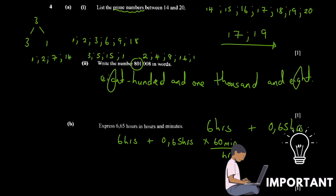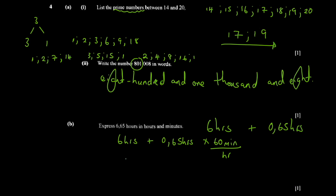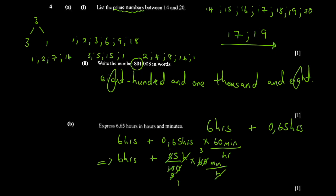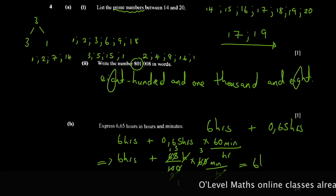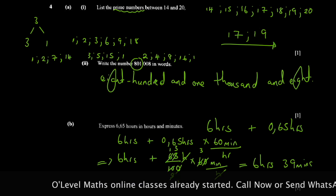So you have six hours plus 0.65 hours multiplied by 60 minutes per hour. It's easier to write 0.65 as the fraction 65 over 100, then multiply by 60. The hours cancel out, leaving you with minutes. Simplifying: 65 times 60 divided by 100 gives you 39 minutes. So the answer is 6 hours 39 minutes.